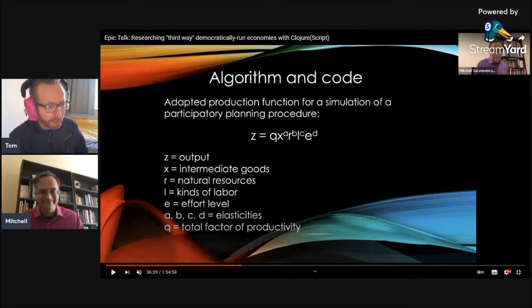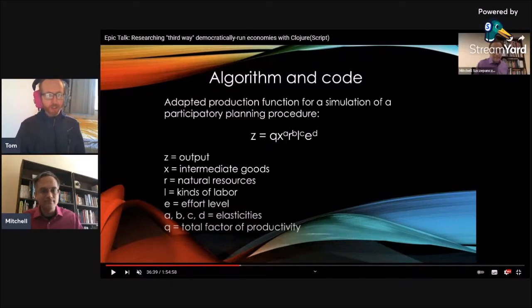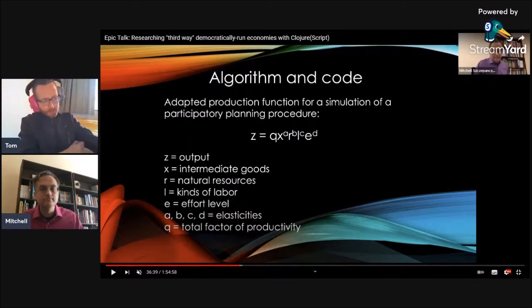Let's jump on to the next bit then. We're going hardcore here. We're going hardcore into the Cobb-Douglas function, some kind of a production function. So let me see if I'm getting this correct from the modeling.